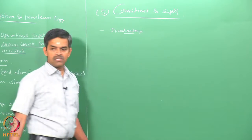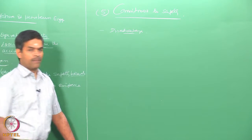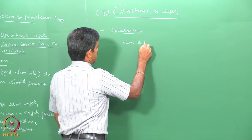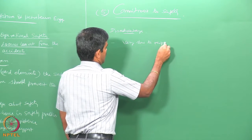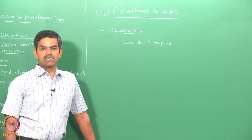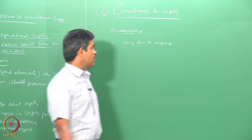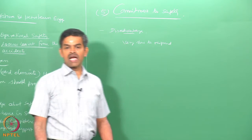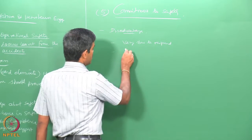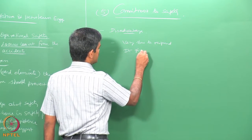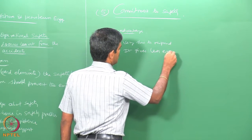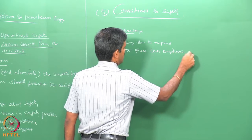A safety program is very important, but what is its major disadvantage? It is very slow to respond. Any violations will not cause an immediate effect on revising the safety program. Therefore, safety programs are always intended to react very slowly. The second issue is that it requires a continuous emphasis on continuous updates.